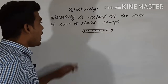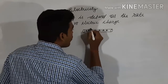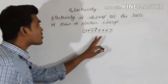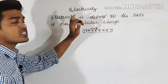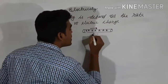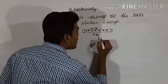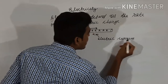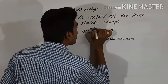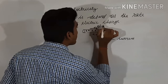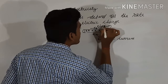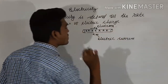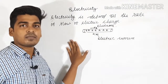Now, in which direction do the electrons move? The electrons move in one direction, but the electric current flows in the opposite direction. This is the direction of electric current, and this is the direction of electrons.